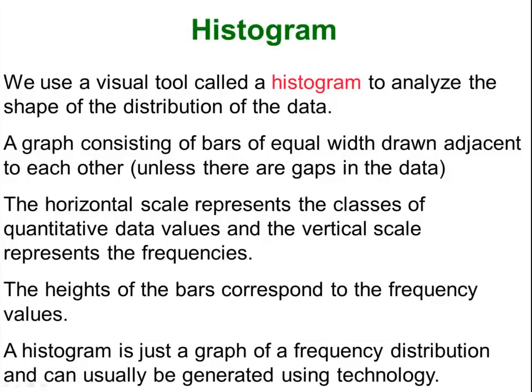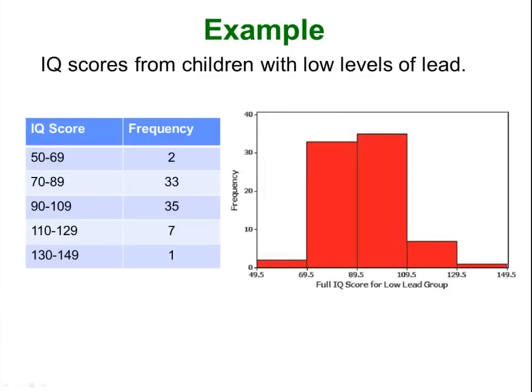A histogram is a very popular visual representation of data used to show the overall distribution and spread of your data. You make a bunch of bars, and the height of each bar represents how many things you have in each class. There is a slight difference between a histogram and a bar graph. You will notice that in a histogram all the bars are touching. A bar graph looks just like a histogram but the bars don't touch. A histogram is used for continuous data and a bar graph is used for discrete data.